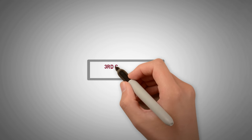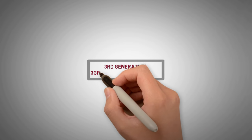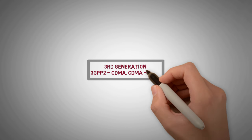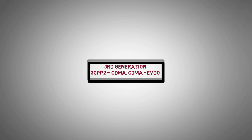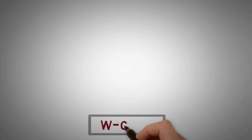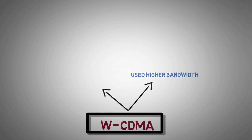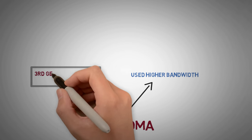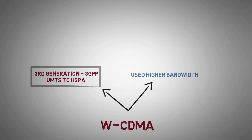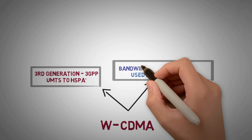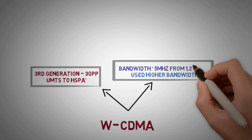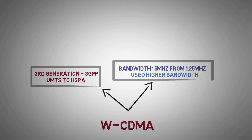It was used in 3GPP2 standards such as CDMA and CDMA evolution data optimized standards. Wideband CDMA or WCDMA spreads the signals over an even higher bandwidth. This was used in the 3G standards of 3GPP from UMTS to HSPA+, where the available bandwidth was 5 MHz compared to 1.25 MHz used in CDMA.